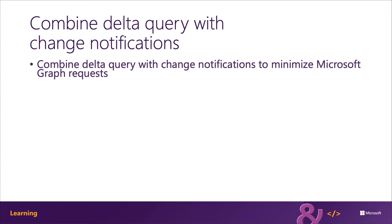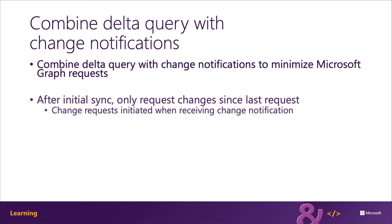Delta query, when combined with another feature of Microsoft Graph, can be used to significantly reduce the number of requests that you need to make to Microsoft Graph. Change notifications, otherwise known as webhooks, are another feature of Microsoft Graph that enables an application to be notified when changes occur to specific data. An application can subscribe to be notified when a specific resource changes, such as users. When a user is added, updated, or deleted, the application is notified that something changed in the users endpoint by Microsoft Graph via an HTTP POST.